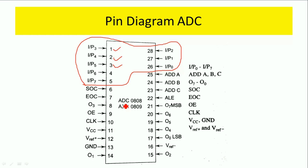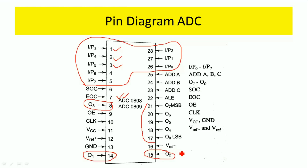This analog-to-digital converter takes analog input and converts it into digital form. It gives digital output on pins 17 to 21, pin 8, pin 14, and pin 15. These pins carry the converted digital data, from output pin 0 to output pin 7. Pin 17 represents the LSB of the digital data, and pin 21 represents the MSB of the digital data. These are the output pins.